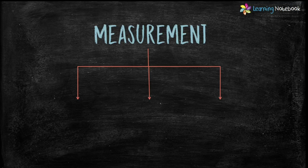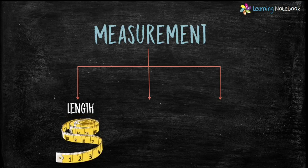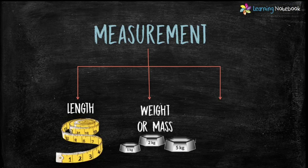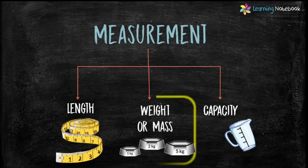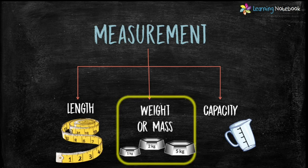When we talk about measurement, we do measurement of length, measurement of weight or mass, and measurement of capacity. In part 1 and part 2 of this chapter, we did measurement of length. In part 3 and part 4, we learned measurement of capacity. Now, in this part, we will learn measurement of mass or weight.